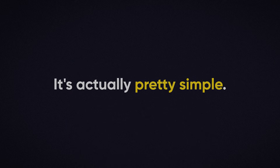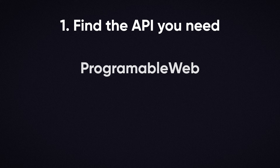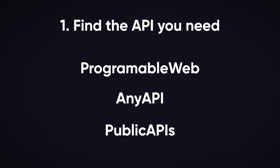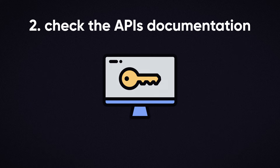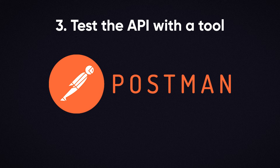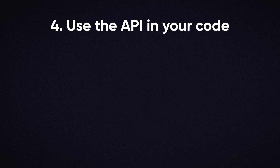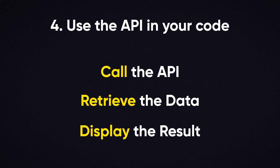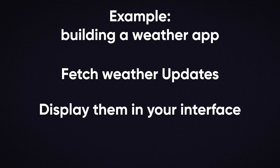And what if you just want to use an API in your app? It's actually pretty simple. First, find an API that provides the data or service you need — websites like ProgrammableWeb, AnyAPI, and public.apis.zone have directories full of APIs you can explore. Next, check the API's documentation to see how it works. Many APIs require an API key, which is like a password that lets you access their data securely. You'll also want to use a tool like Postman to test the API and see what kind of data it returns before integrating it into your project. Once you're comfortable with how the API works, you can write code in your app to call the API, retrieve the data, and display it however you want — for example, if you're building a weather app, you can use an API to fetch the latest weather updates and show them in your interface.